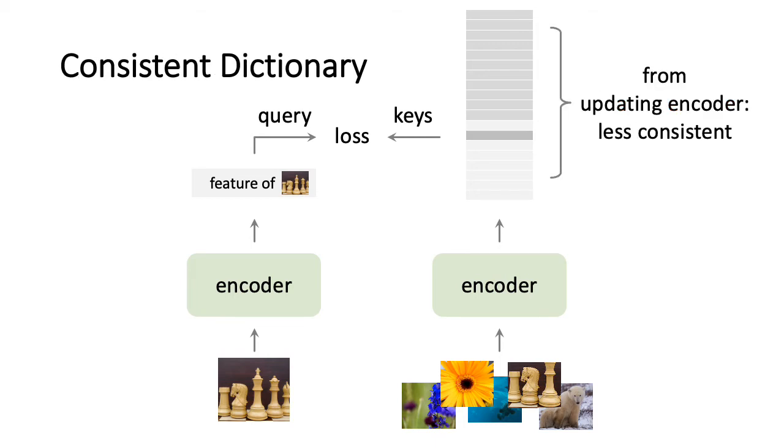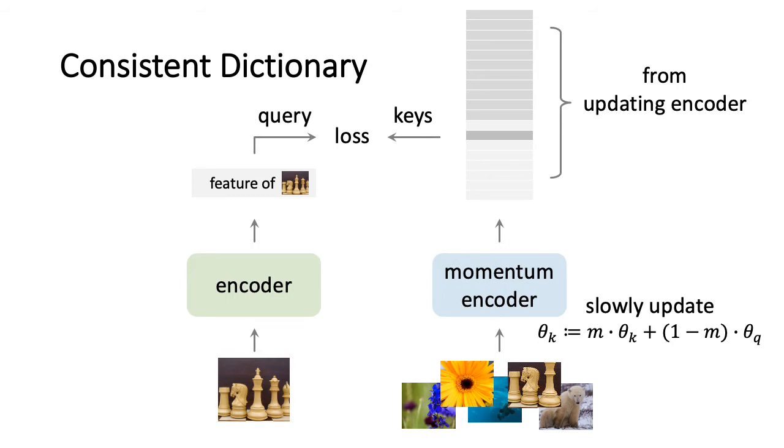The features in this dictionary are from an updating encoder that covers multiple batches, so they are less consistent. To improve the consistency of the features, we propose to use a momentum encoder that is slowly updated. The momentum encoder is a moving average of the original encoder. In the paper, we show by ablation experiment that this momentum encoder is of central importance.